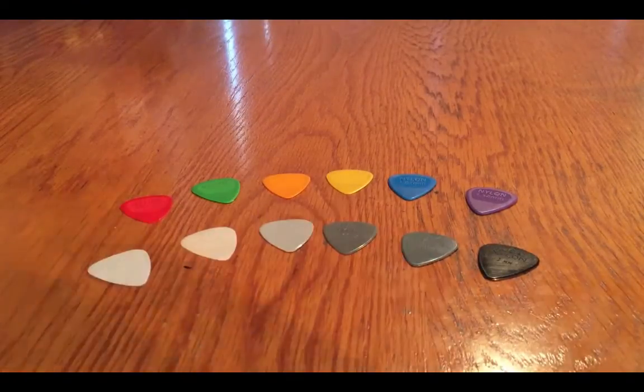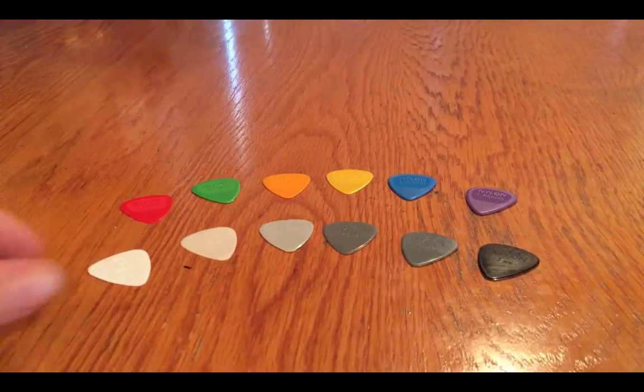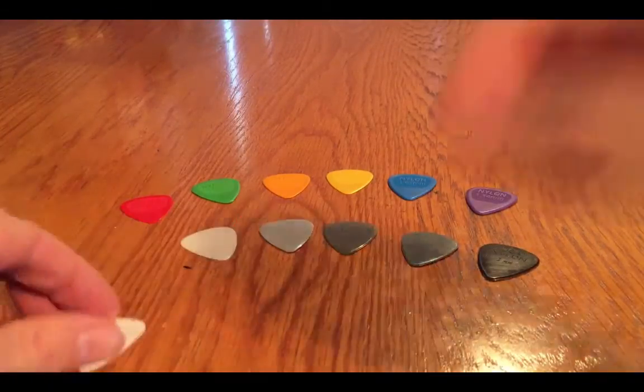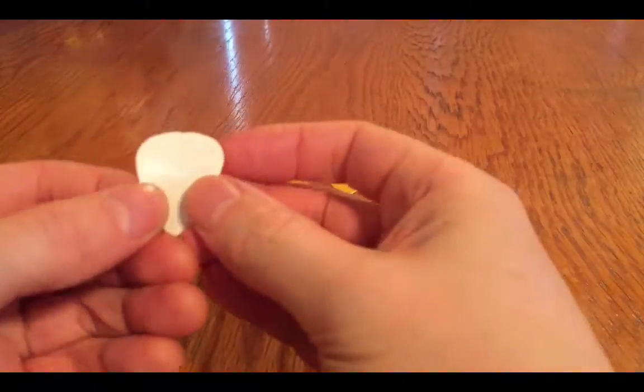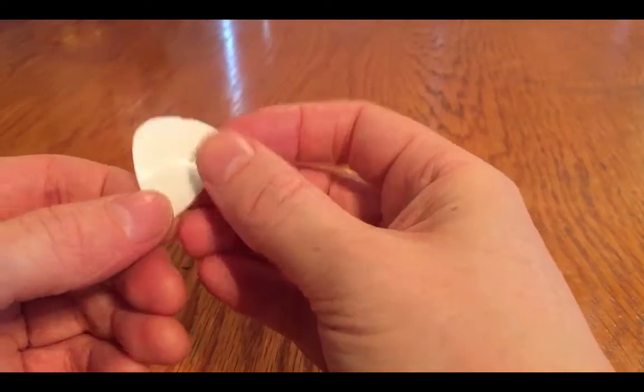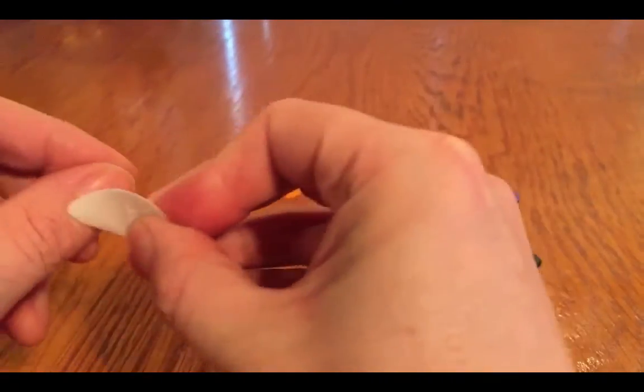Now the ones at the front are the regular nylon Dunlop picks. They start down at this is a .38mm. It's very floppy.